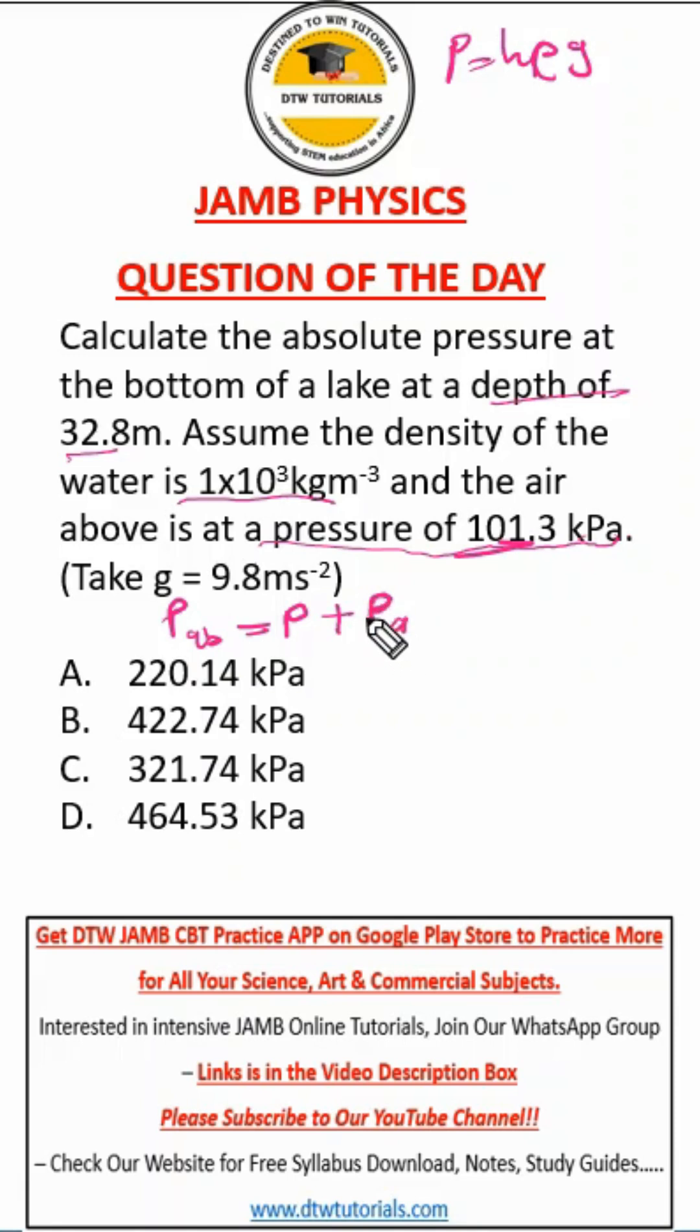Now, to get our pressure in the liquid at this height, we have to calculate it, which is height times density times g. So we have height which is 32.8 times our density, this is 10 to the power 3, which is 1000, then times our g which is 9.8.